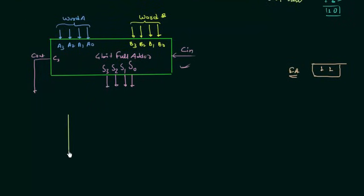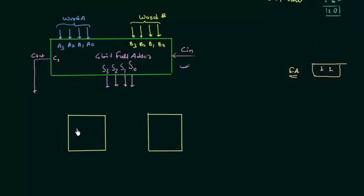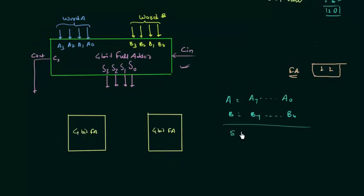Let's see how to build an 8-bit full adder. We will need two 4-bit full adders. Let's say A is the first 8-bit number with bits A7 down to A0, and B is the second 8-bit number with bits B7 down to B0. We obtain the sum S7 down to S0, along with a carry output C7. You can easily implement this using two 4-bit full adders.